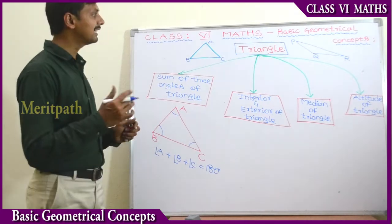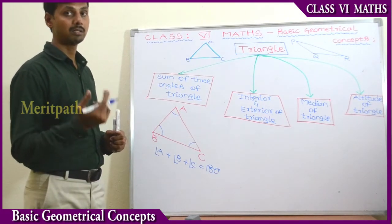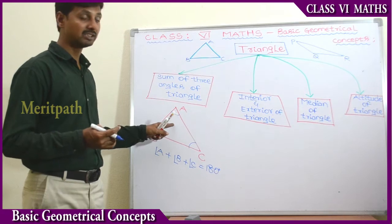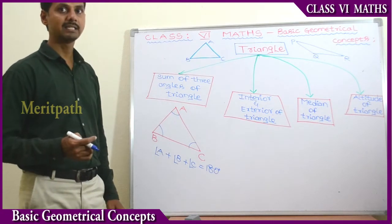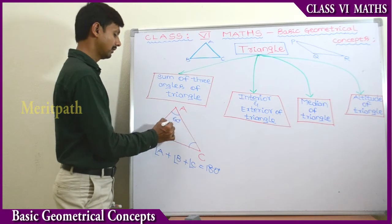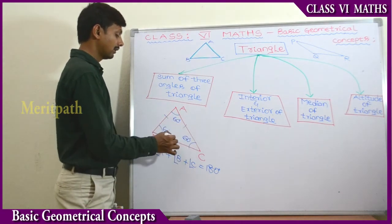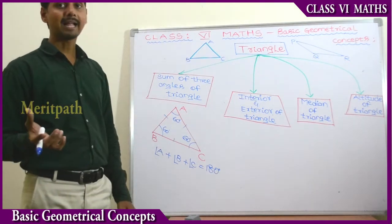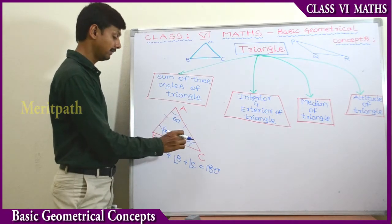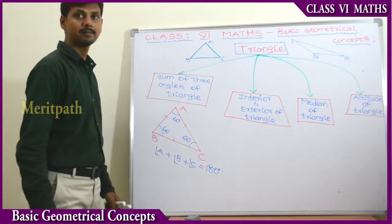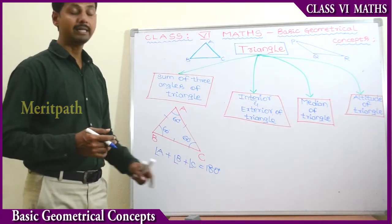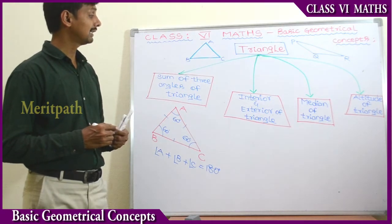So if we draw any kind of triangle — whether it is an acute angle, right angle, or obtuse angle triangle — and measure the sum of all the angles, it is equal to 180 degrees. For example, any equilateral triangle has each angle equal to 60 degrees. So 60 plus 60 plus 60 equals 180 degrees. Similarly, for any triangle, the sum of all angles will be equal to 180 degrees.